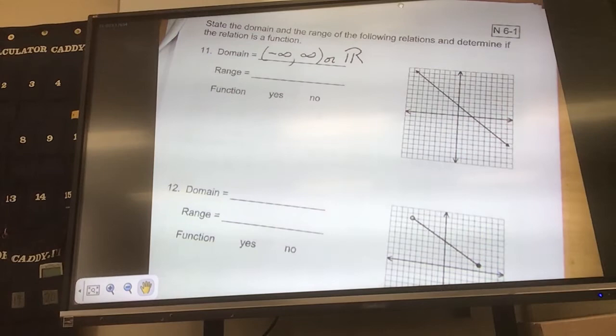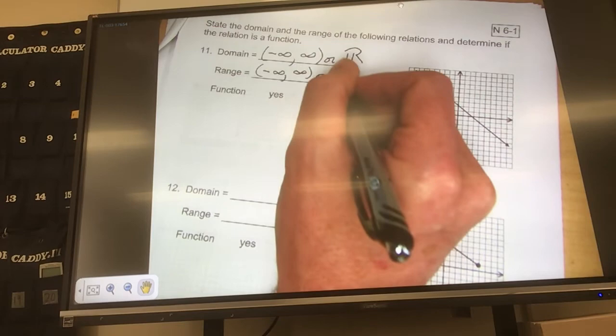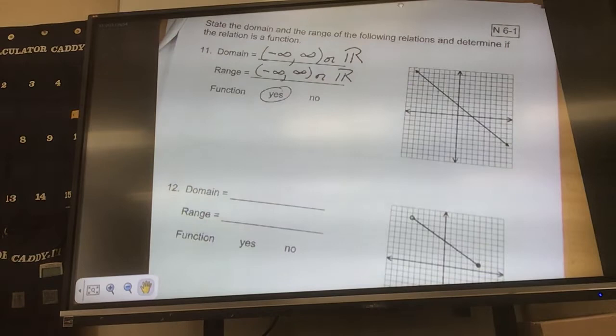Range. How low is this thing going to go? All the way, so it would be negative infinity. How high? All the way. So, infinity. Or you could have did all real numbers. Is it a function? Yes. No matter where I drew a vertical line test on it, it would pass with only one cross.